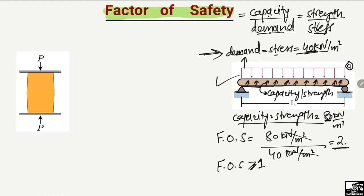Now let's discuss the same concept for a column. Consider a rectangular column with a compressive load acting on it. We assume this compressive load is 400 kilonewtons. There is some resistance provided by this column against this load.